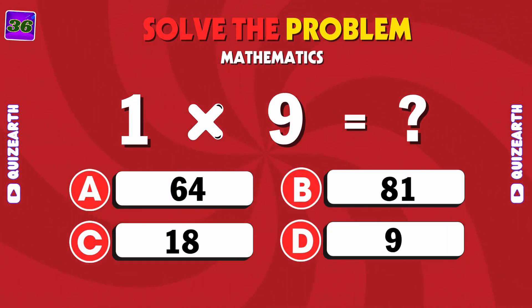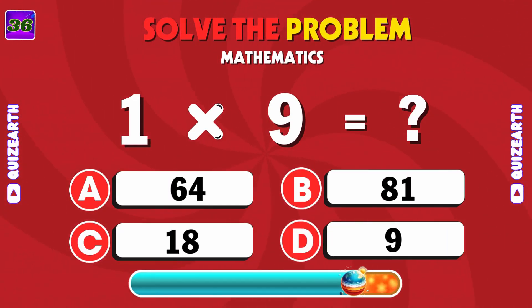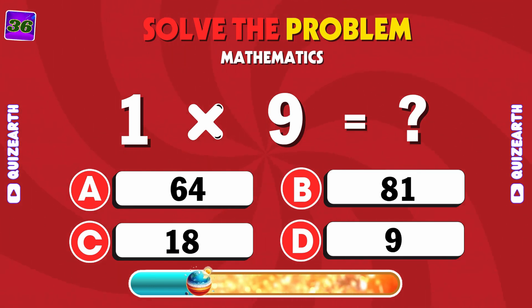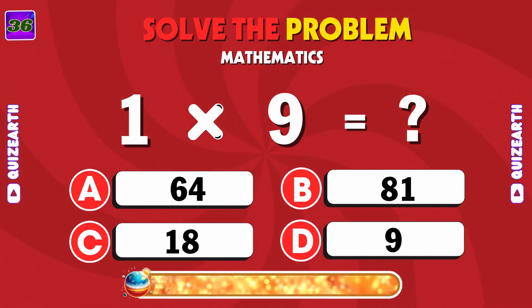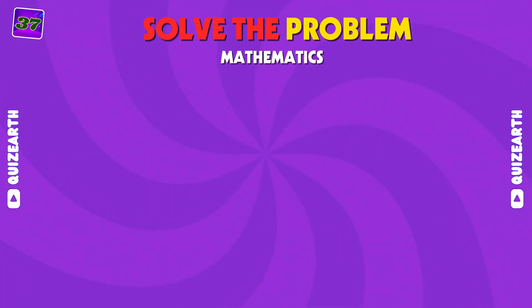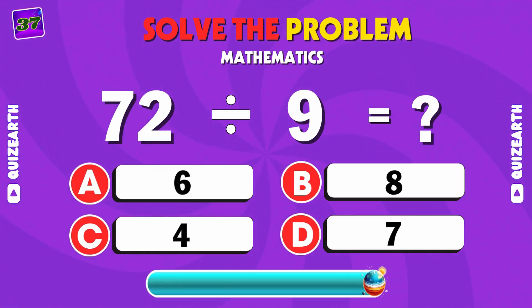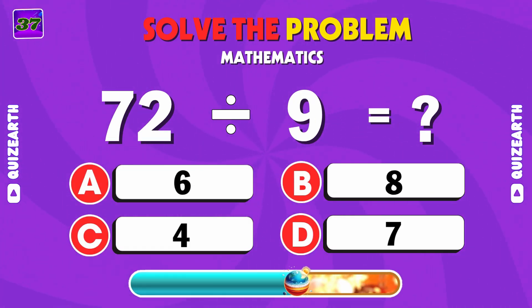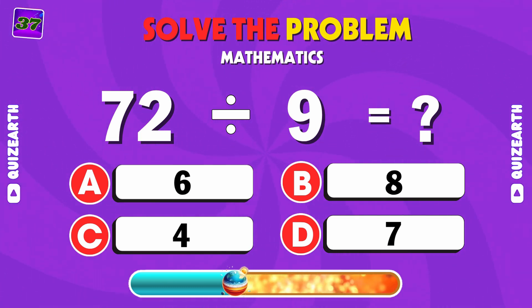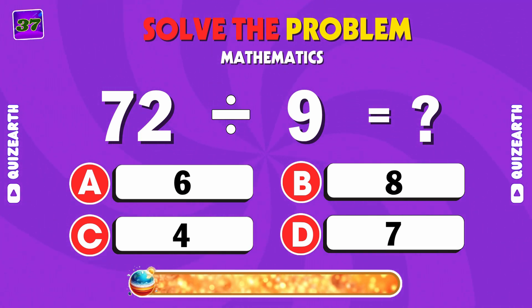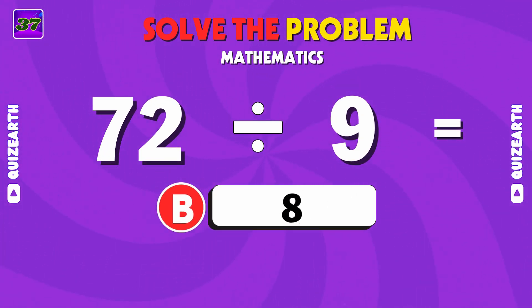What is 1 times 9? Give it a try and find out. D: 9. Division time. What is 72 divided by 9? B: 8.